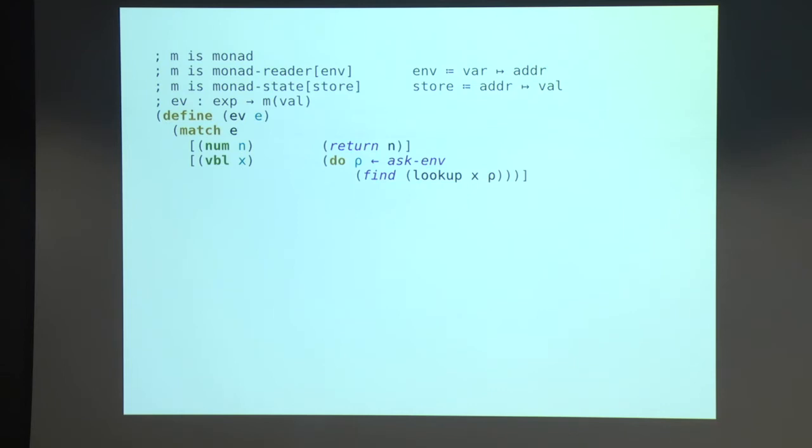So let's get started. This is programming languages 101. We're writing an interpreter. We match on the expression. In the case it's a numeric literal, we return in the monad just that literal as a value. If it's a variable, we do the ask-env effect, which returns the current environment. And we look up x in the environment. That will give us an address. And we call this function find, which is going to look up the value bound to that address. I'm leaving find as a parameter, which is why I've put it in italic purple.